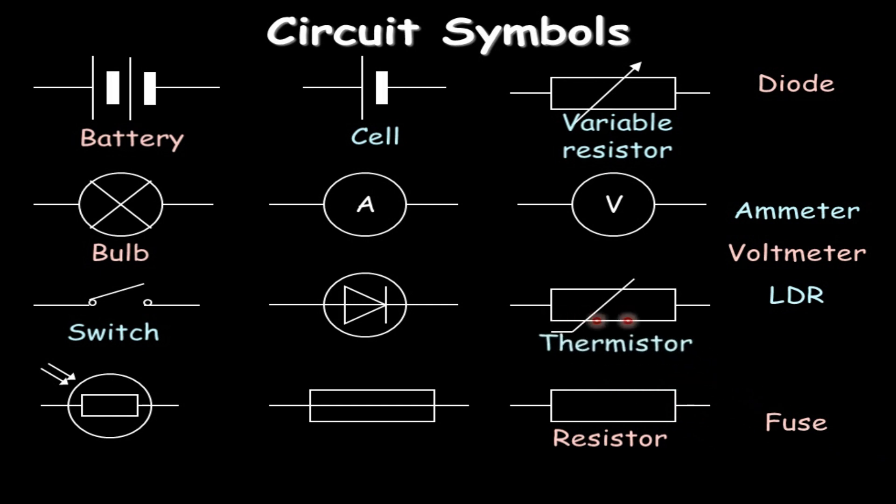This one, which is again the resistor symbol but with a line through like that, is a thermistor. Therm meaning heat, so it's a resistor that depends on heat.